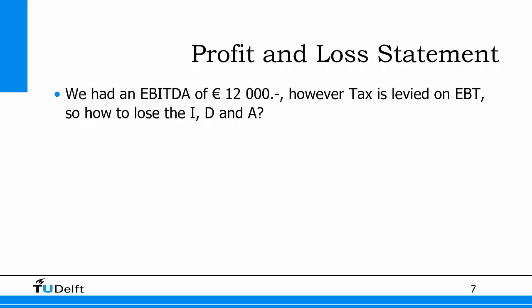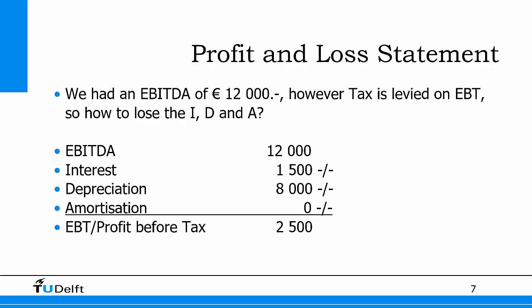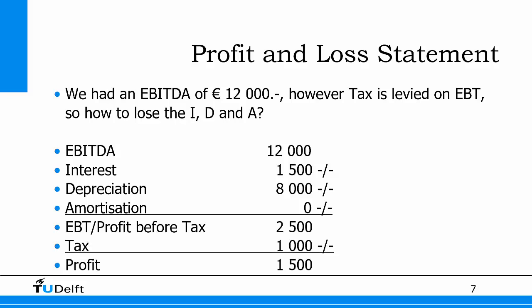Amortization is zero — as discussed in an earlier video, amortization is the write-off of intangible assets and you don't have a copyright or taxi license to write off. Depreciation is for the car: depreciated to zero over five years, so 40,000 divided by 5 equals 8,000 per year. Interest: you borrowed 30,000 euros at 5%, so interest is 1,500 euros. Subtracting these from EBITDA gives earnings before tax of 2,500. At 40% tax, that's 1,000 in tax, leaving a final profit of 1,500.